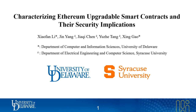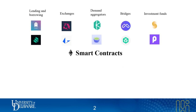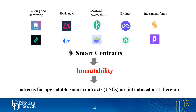Smart contracts are critical building blocks for decentralized applications. To enforce transparency and trust, smart contracts are not allowed to be modified once they are deployed. However, this immutability conflicts with various legitimate causes, such as introducing new functional features. Thus, various design patterns for upgradable smart contracts have been introduced.